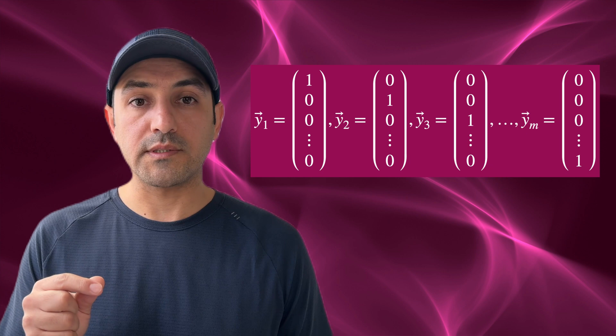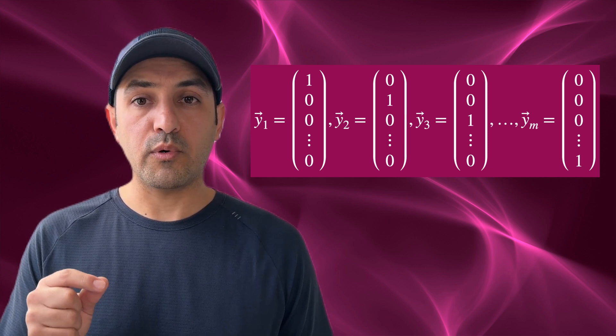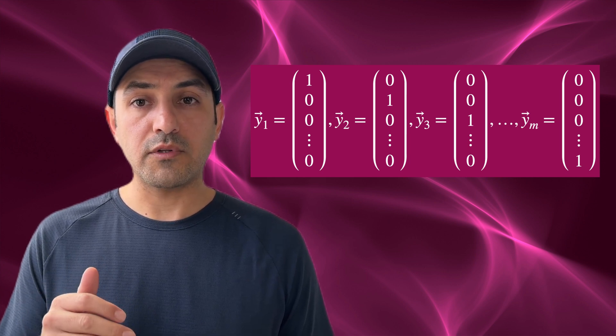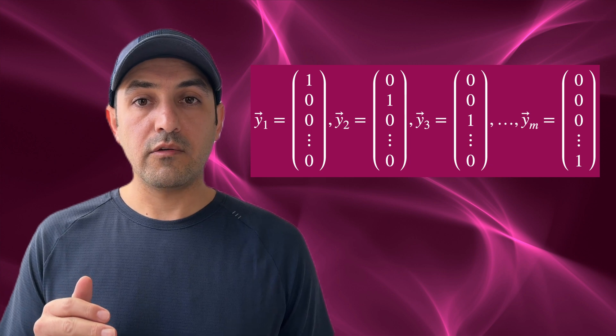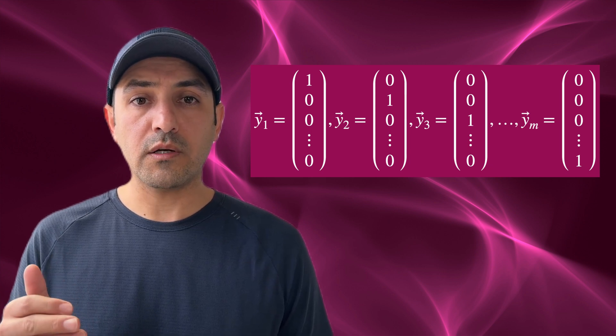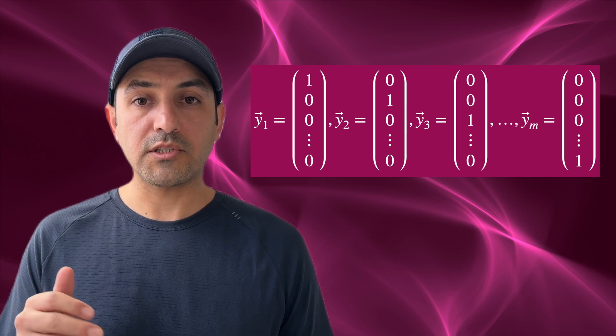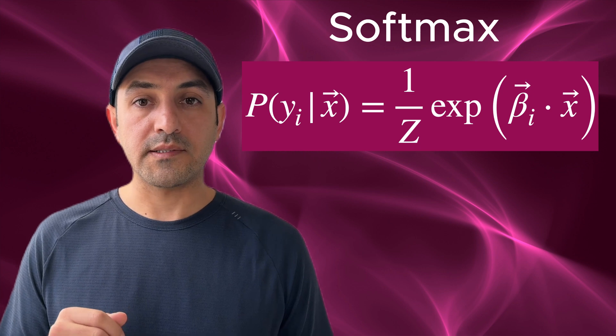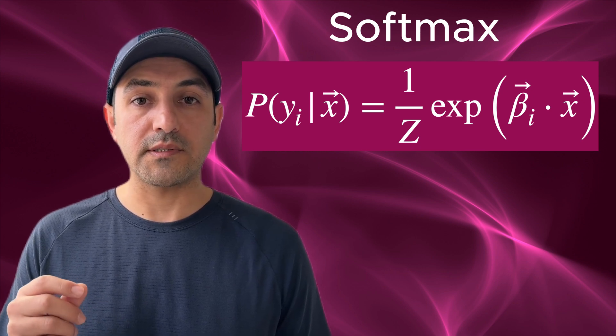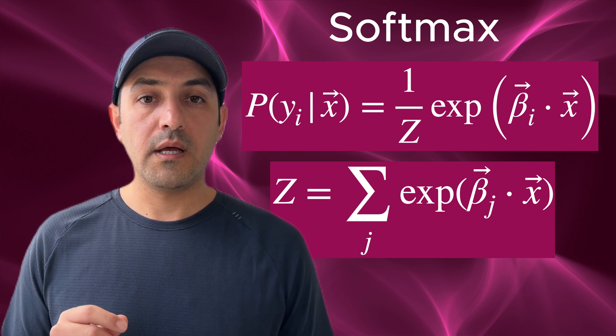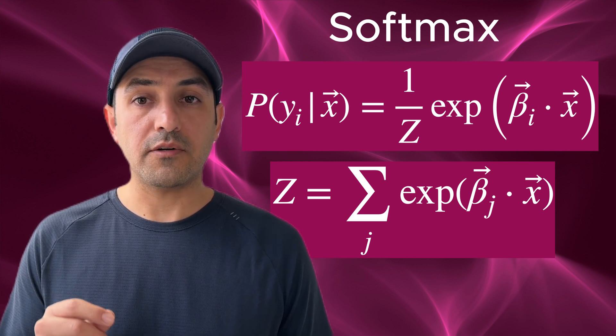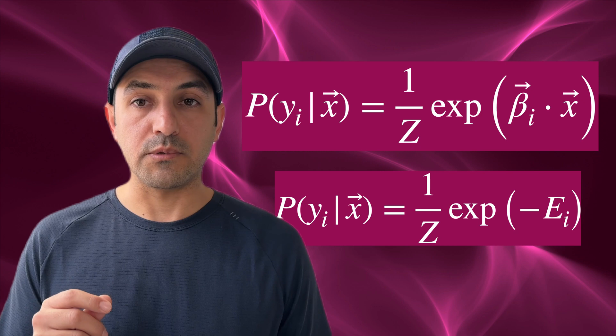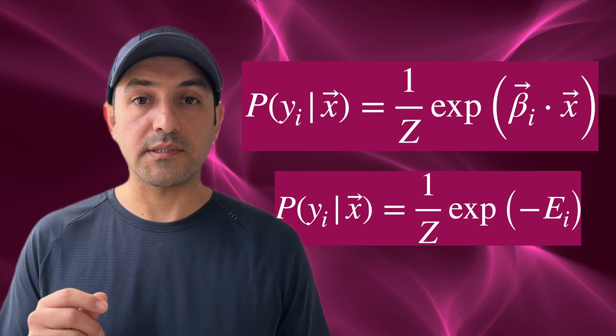To see how the Boltzmann distribution emerges out of this, we know that only one component in each y vector is non-zero, and we refer to that component by number i. In this case, it means each component of the y vector refers to one of the classes. When that component becomes one, that class is selected. With this convention, the probability for class i will look like this equation, and this is the softmax function. And the partition function z is the sum of all the classes. Now if we define the energy of the system as minus the beta dot x, then this will be the Boltzmann distribution explaining physical systems like a gas in a container.